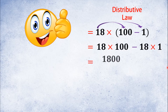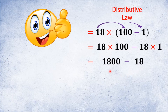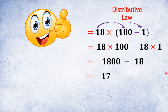If we do 18 times 100, we get 1800. Then we write 18 times 1 and subtract. For example, think of it as having 1800 rupees, and then you subtract 18 rupees. You have 1800 minus 18, which gives us 1782.